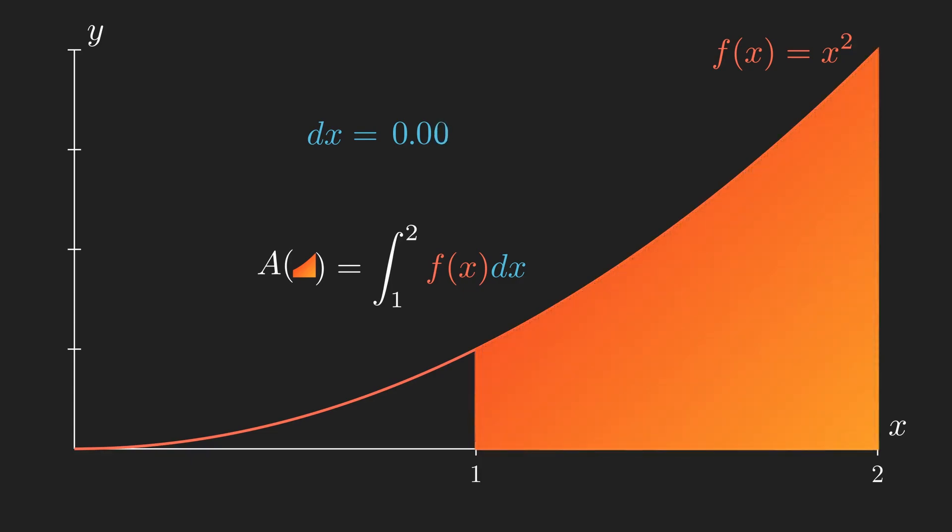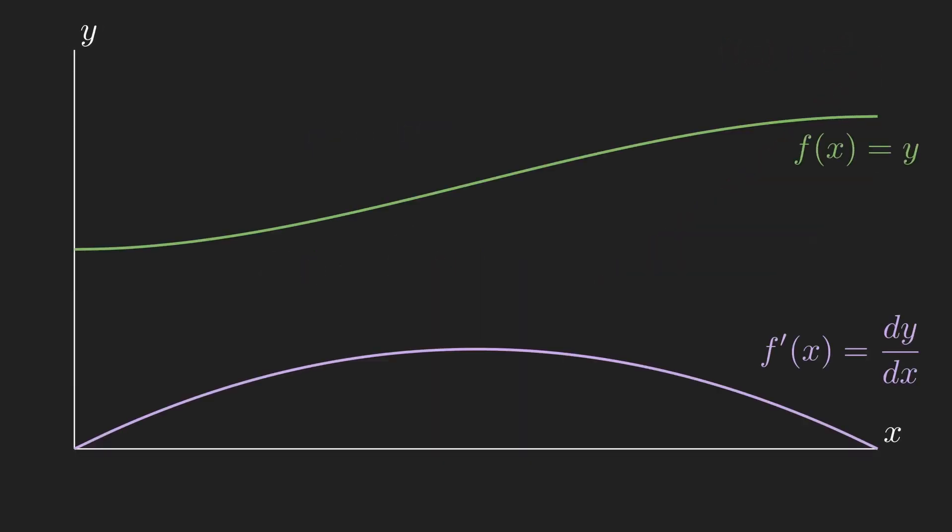The final question, perhaps, is what on earth this has to do with differentiation, or the rate of change. The link can be found by looking for a way to go from some derivative, f dash of x, to the original function, f of x. Or said another way, how can we work out y from dy by dx?